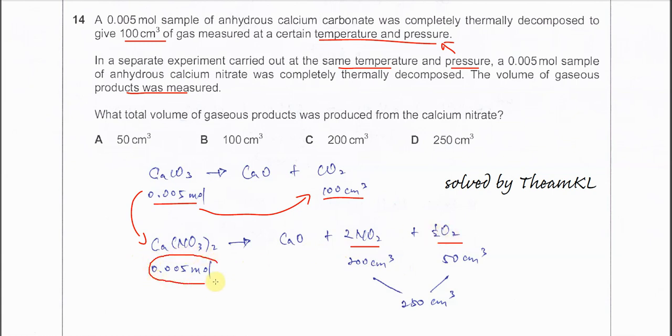We use the same comparison: 0.005 mol will form 200 cm³ of NO₂ because the ratio is 1 to 2. Just now 1 to 1 was 100, now it's 1 to 2, so 0.005 should produce 200 cm³. This is for NO₂.